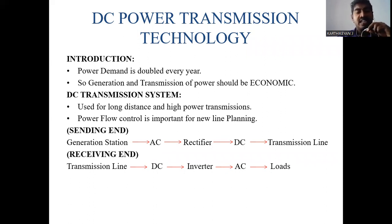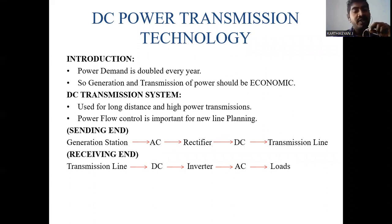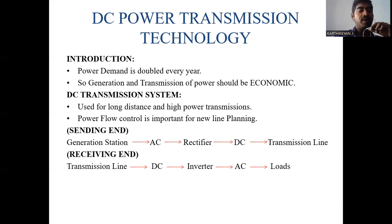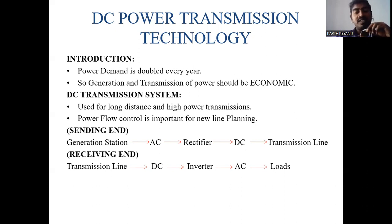At the sending end, the generation station produces AC power, which is fed to a rectifier that converts AC into DC. This DC is then fed to the transmission line. At the receiving end, the DC power from the transmission line is fed to an inverter, which converts DC back into AC, which is then supplied to the load. This is the basic process of a DC transmission system.